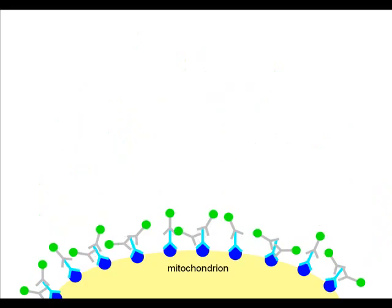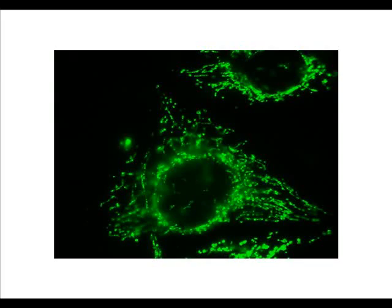More than one secondary antibody may attach itself to a primary antibody, increasing the amplification of the stain. Here is an example of mitochondria detected by immunofluorescence in human cells.